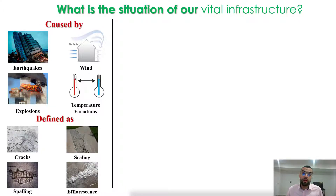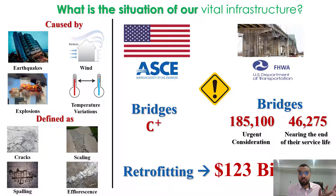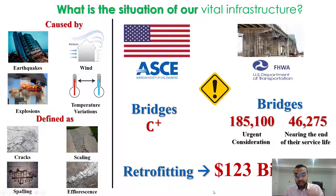This damage is defined by an ensemble of cracks, scaling, or efflorescence, which can appear on the structural surface of our structures. The American Society of Civil Engineers reported that the situation of its bridges is marked as C+ on a scale from A to F. The Federal Highway Administration reported that more than 185,000 bridges are in need of urgent consideration, where more than 46,000 of them are nearing the end of their service life.